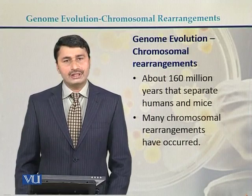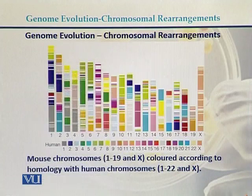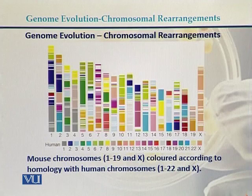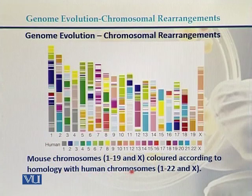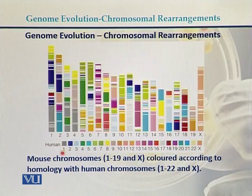Many chromosomal rearrangements have occurred in the past. Here is a diagram where we can do a comparison between the human genome and the genome of the mouse. These are the chromosomes of the mouse — mouse chromosomes 1 up to 19 and the X chromosome — compared according to homology with human chromosomes 1 to 20 and X. These are the human chromosomes and here is the X chromosome.